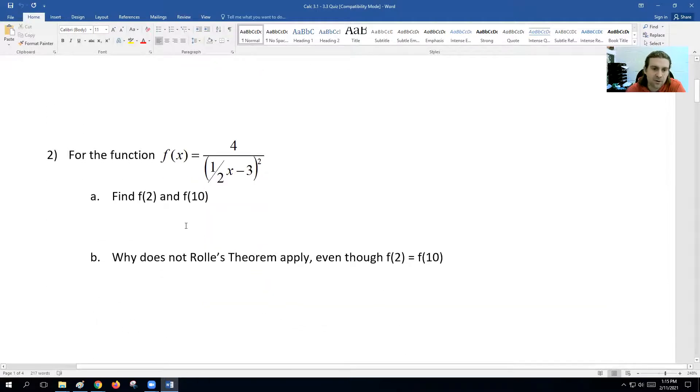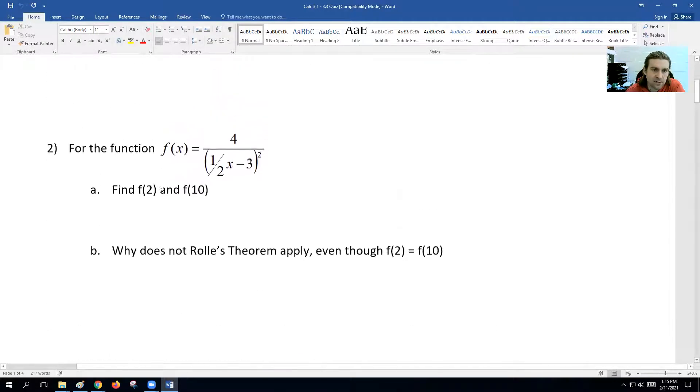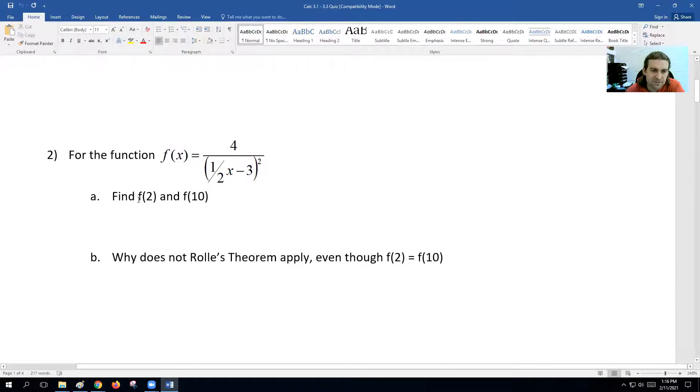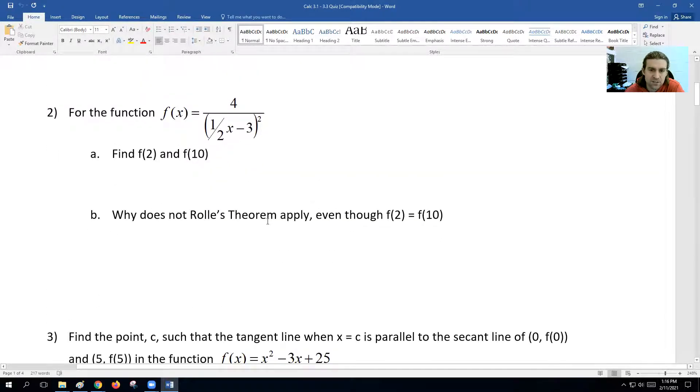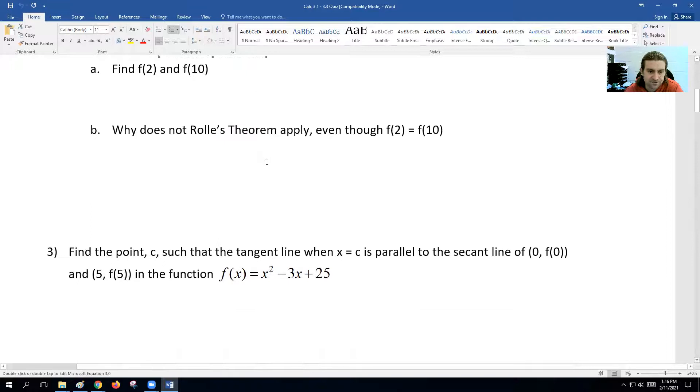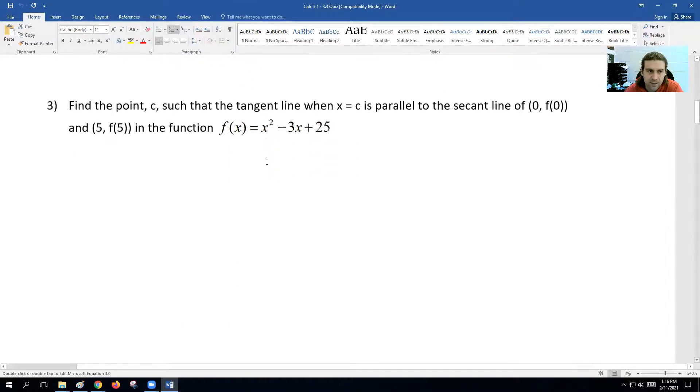Next, you have two equations here. You'll find f(2) and f(10). You'll plug in 2 for this equation and 10 for this equation. They will equal the same number. The question is, why does Rolle's theorem not apply even though f(2) equals f(10)? Well, you'd look at this and say there's a jump in the graph. You just have to tell me where the jump is - where is X discontinuous for the function?